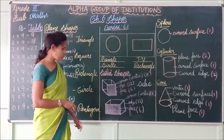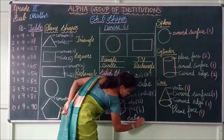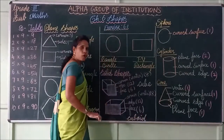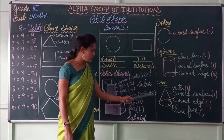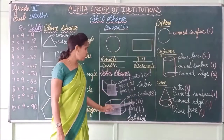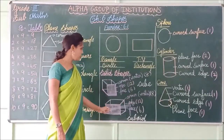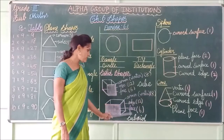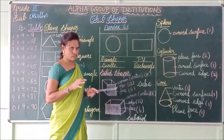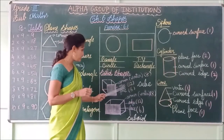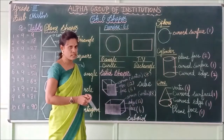Next — what shape is this? This is a cuboid. In a cuboid, the corners or vertices are 8, and edges are 12, and faces are 6. So both cube and cuboid have the same number of corners, edges, and faces. Only the shape can be different.